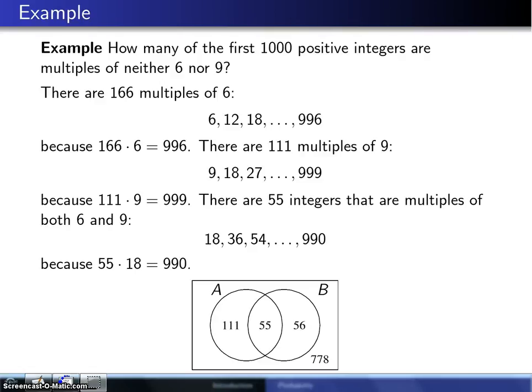Set theory can be used to solve probability problems, but it can also be used to solve problems in counting. And here is one such example. The question is, how many of the first 1,000 positive integers are multiples of neither 6 nor 9?